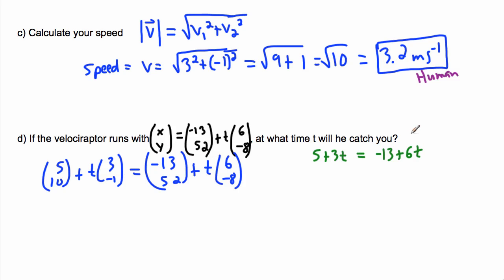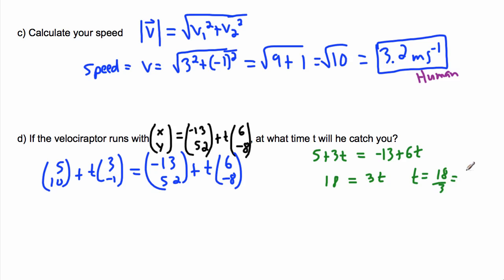Solving for t: move 3t to the right and move minus 13 to the left. That gives 5 plus 13 on the left, which is 18, equals 6t minus 3t, which is 3t. So t equals 18 divided by 3, which is 6 seconds. That's how long I have until the velociraptor catches me.